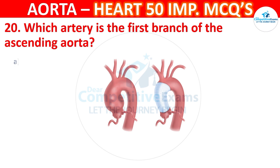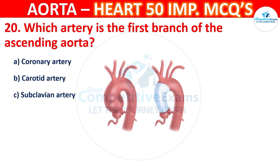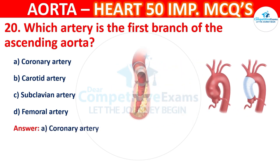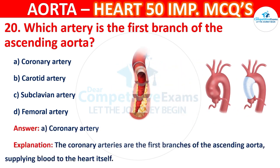Question number 20: Which artery is the first branch of the ascending aorta? Options are coronary artery, carotid artery, subclavian artery, or femoral artery. The correct answer is the coronary arteries. The coronary arteries are the first branches of the ascending aorta, supplying blood to the heart itself.